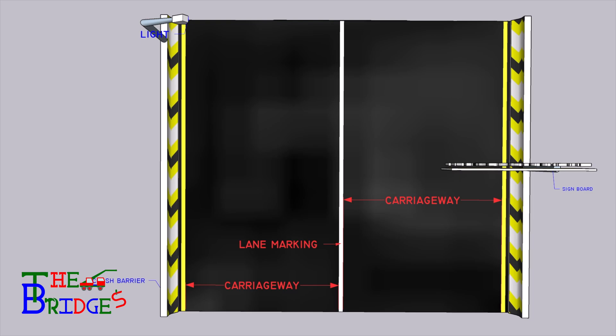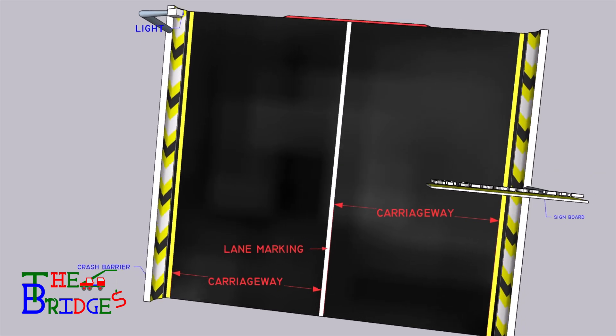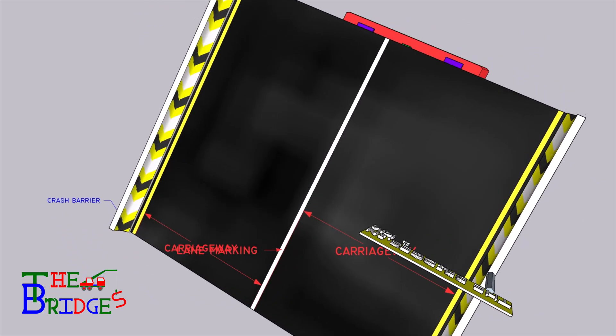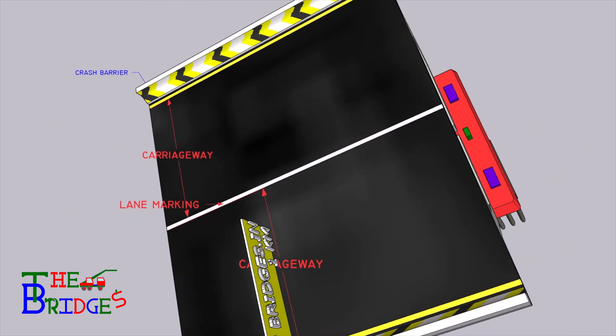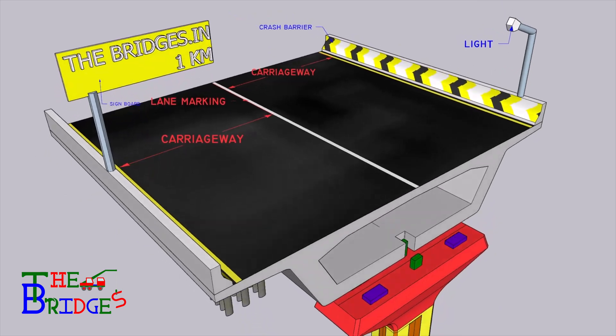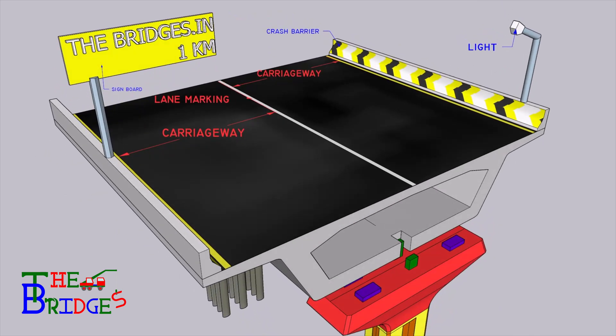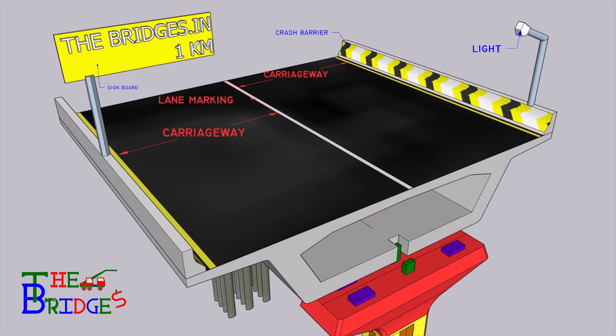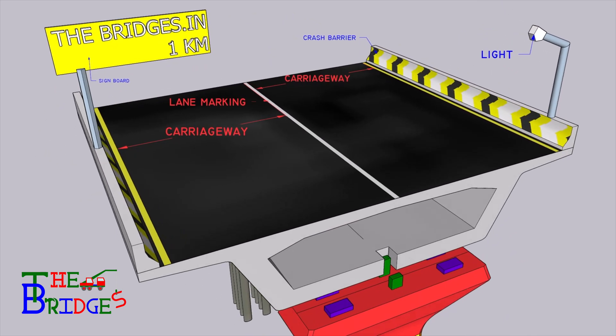Crash barrier. Crash barrier is the member that guides the road width limit to the vehicle driver, and also protects the vehicle from overturning or falling.